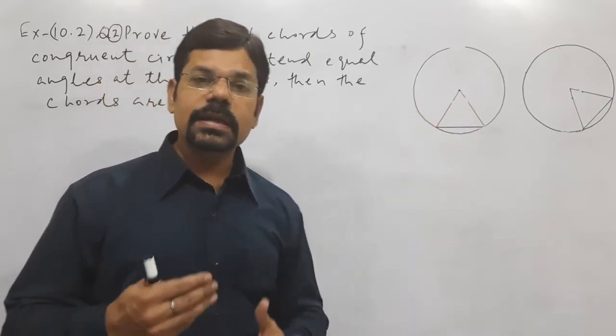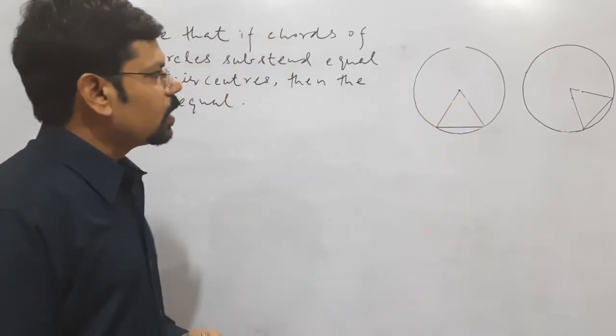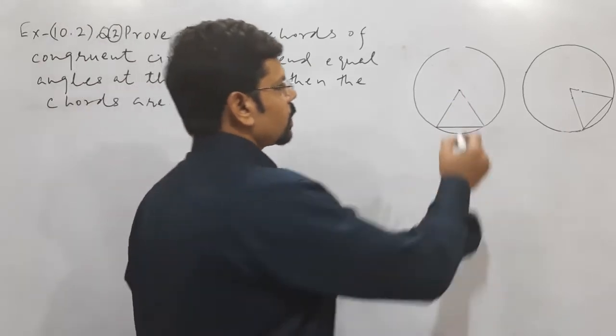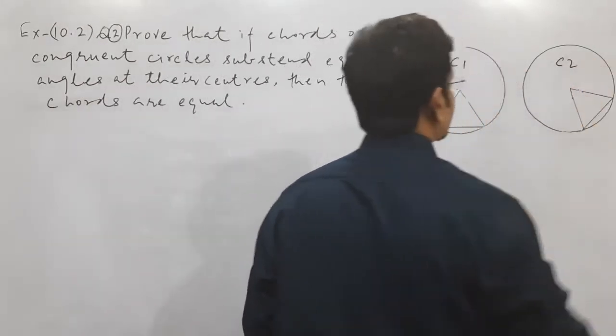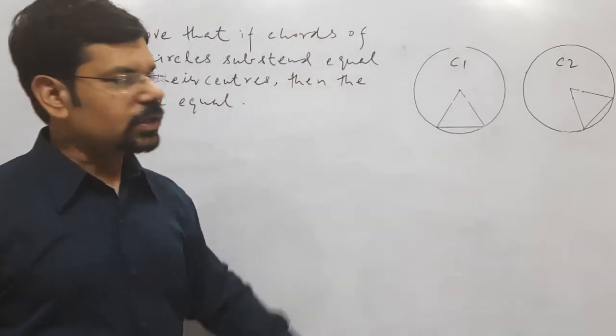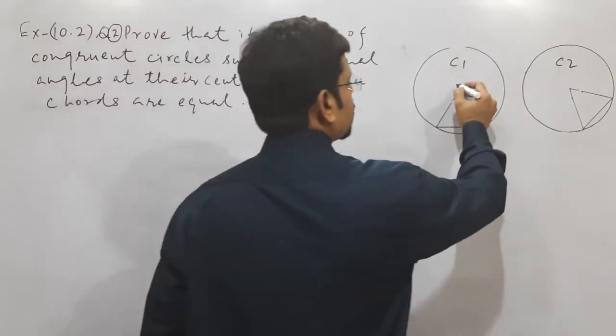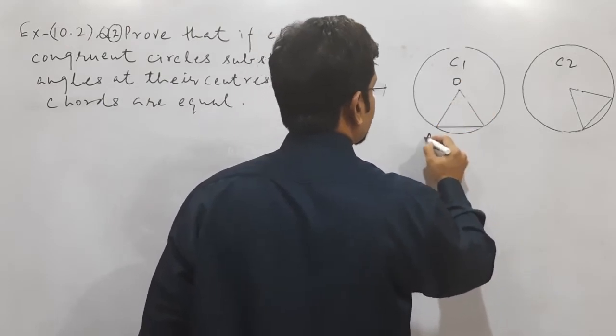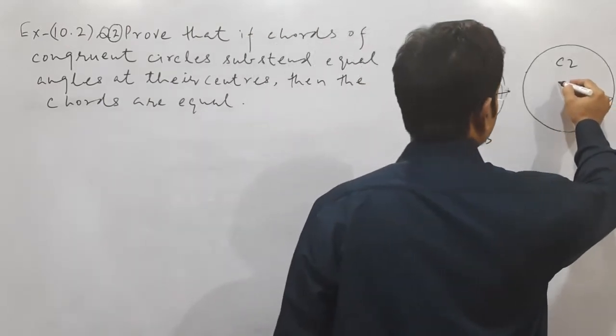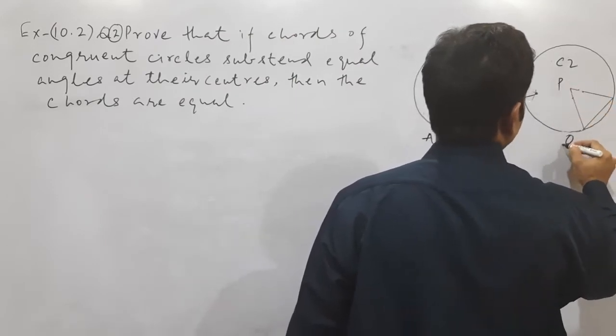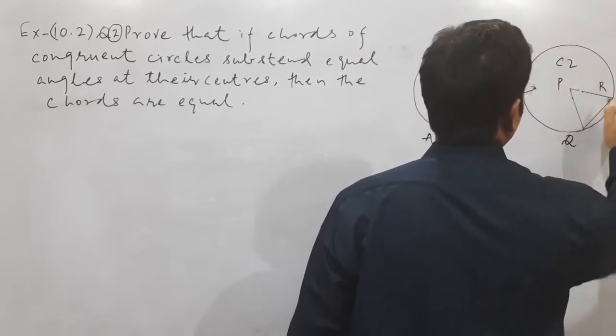Now again here we are assuming two congruent circles C1 and C2. Again, same—this is center O and this is triangle OAB, and the second P center and this PQ are, this is a triangle.